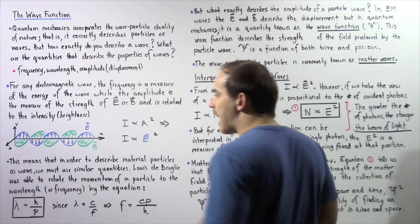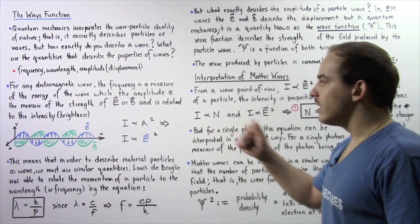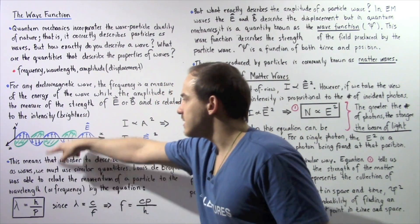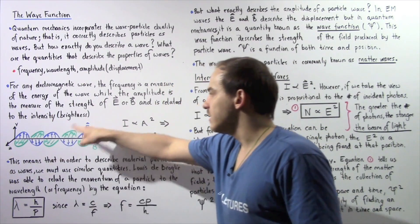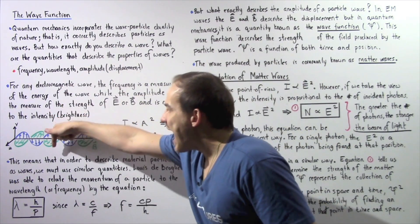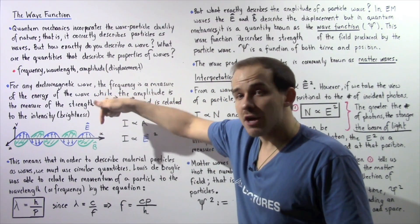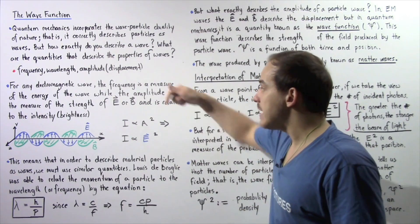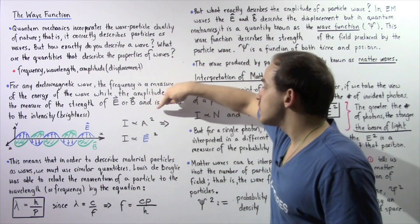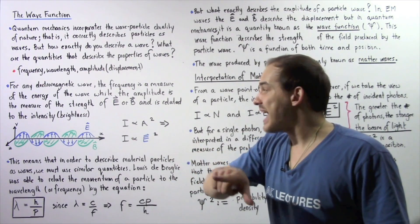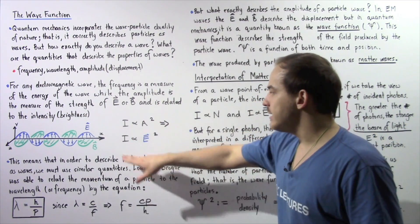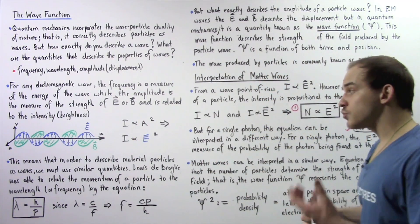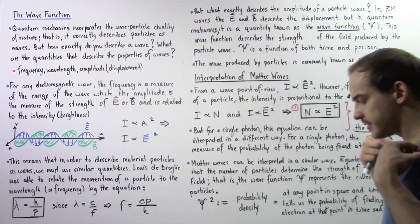If we have oscillating electric and magnetic fields — our electromagnetic wave — the amplitude represents the strength of the electric field. Because the intensity of an electromagnetic wave is directly proportional to the square of the amplitude, and the amplitude is the electric field, our intensity is directly proportional to the square of the strength of the electric field.